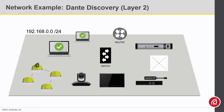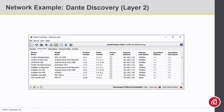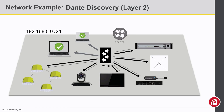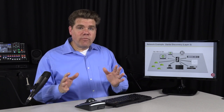Let's get back to our discovery example. When Dante Controller launches, it will subscribe to a multicast stream at 224.0.0.251 port 5353. This discovery message is going to act like a party line phone — we'll be able to hear everybody talking back to us. If multiple devices are subscribed, multiple devices will hear all of those announcements. That's why we can have multiple copies of Dante Controller on the network, and they'll all get the same information. Every Dante device will subscribe to this stream as well — that is how Dante devices learn about other Dante devices on the network.